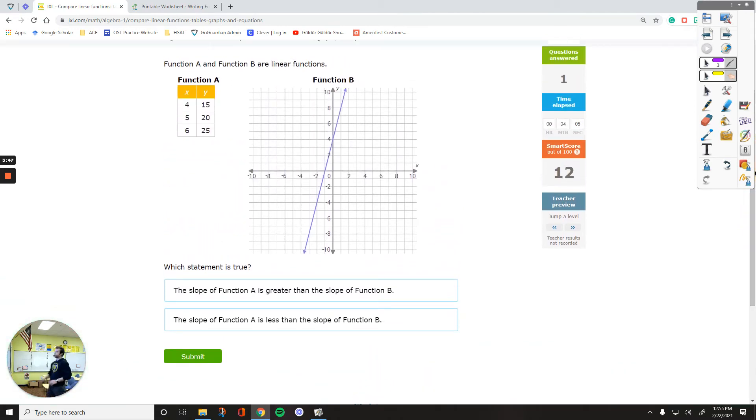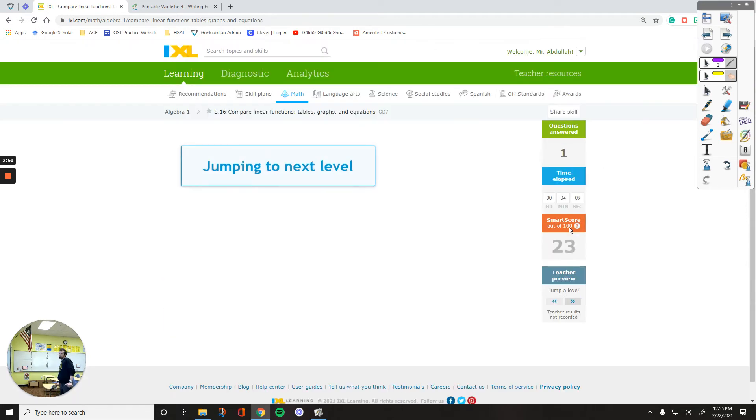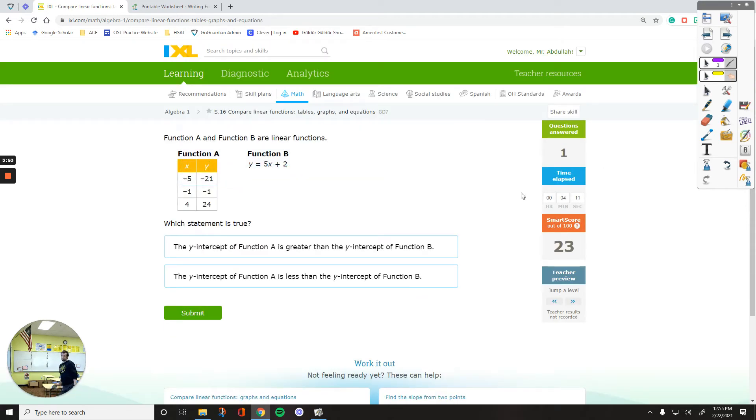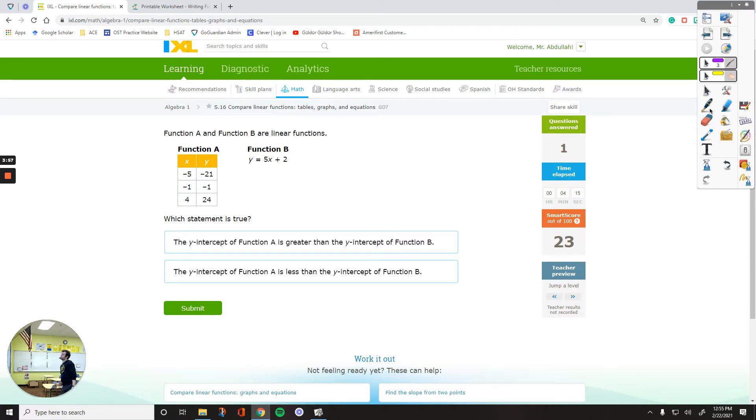Same concept. Let's talk about the y-intercept for this one. The y-intercept of a function in the form of mx plus b is pretty simple. That's the y-intercept, the number in the end. So it's positive 2 for this one.